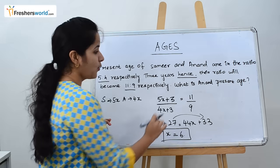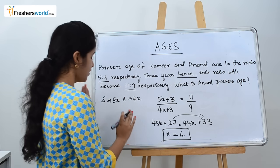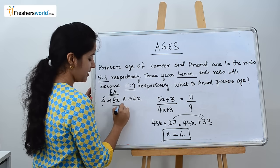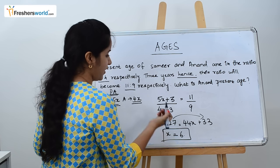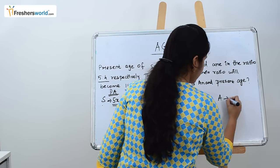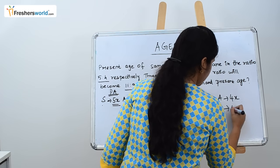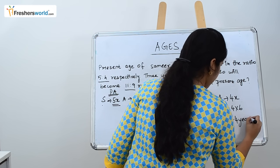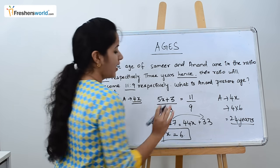What are they asking? What is Anand's present age? We know this is the present age: for Samir it's 5X and for Anand it's 4X. We have to find Anand's age. 4X is 4 into 6, which is 24 years. Now we know Anand's present age.